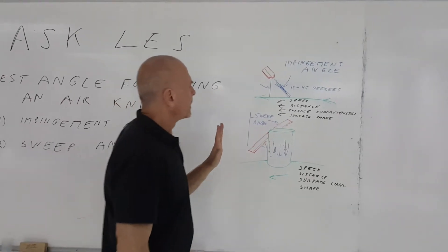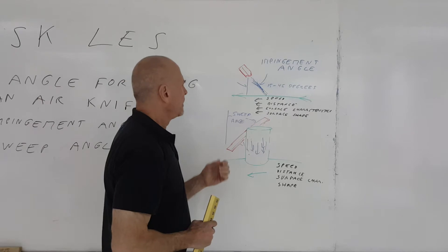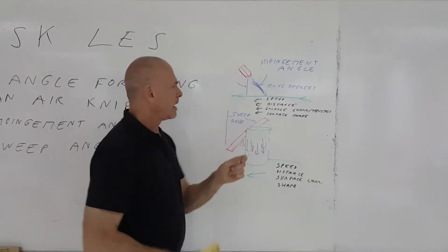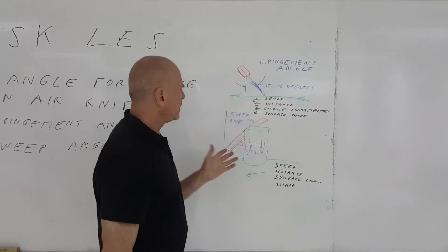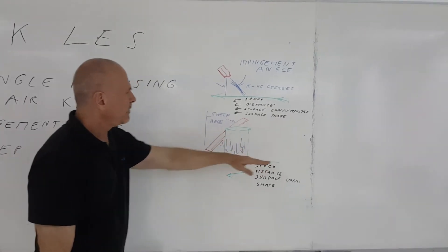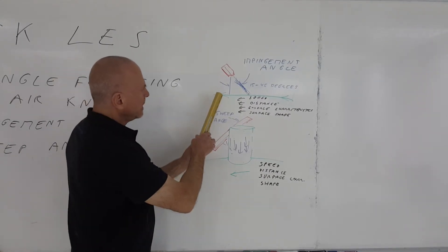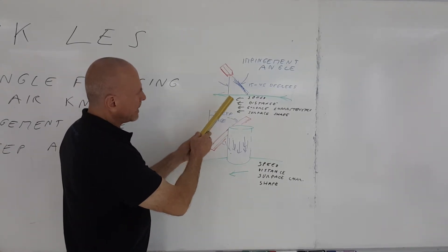The sweep angle is best described as the angle you want to orient that air knife against the surface that you're blowing off. The best way to describe this is to use a bottle or can as an example. Let's say we have a can moving on a conveyor from right to left. The sweep angle is how you orient that air knife.